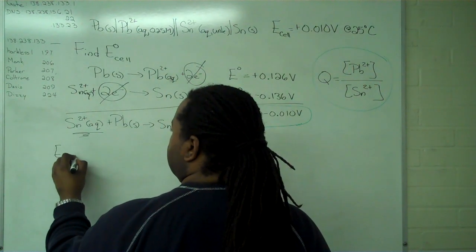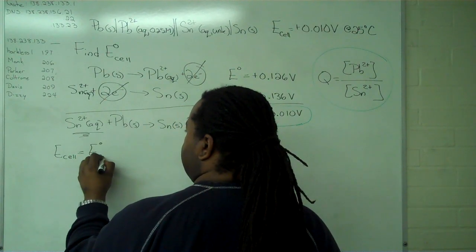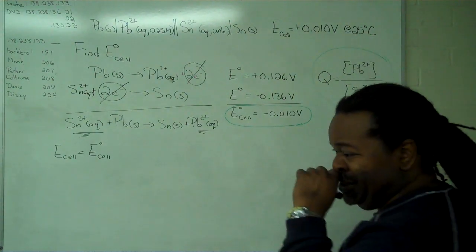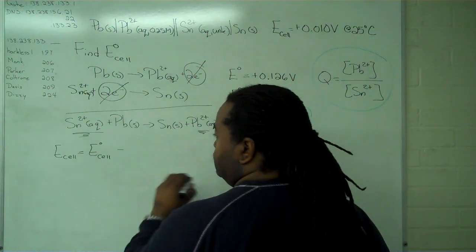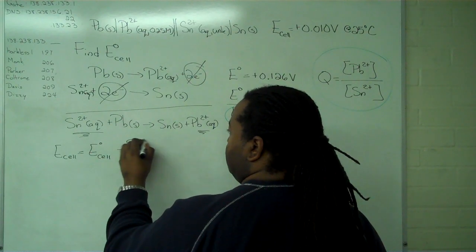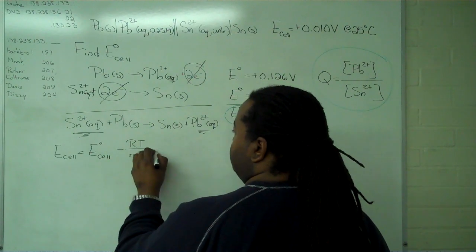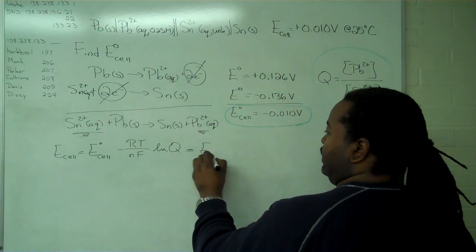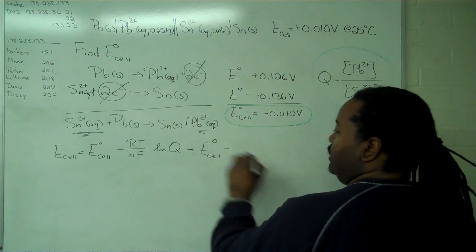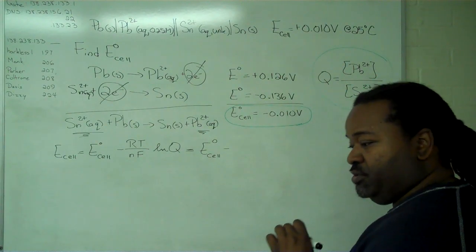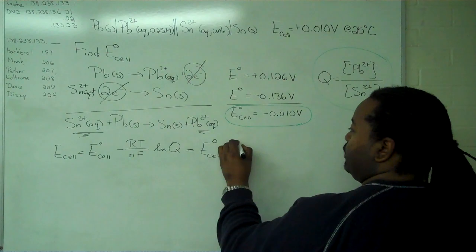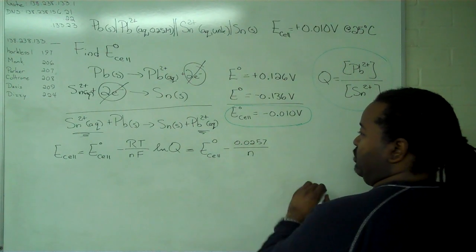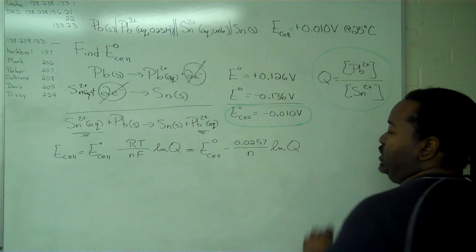E cell equals E cell standard. Because we have 25 degrees Celsius, we can substitute where we would have RT over nF times ln Q. Instead, we'll have E cell standard minus 0.0257 divided by the number of electrons, multiplying ln Q.